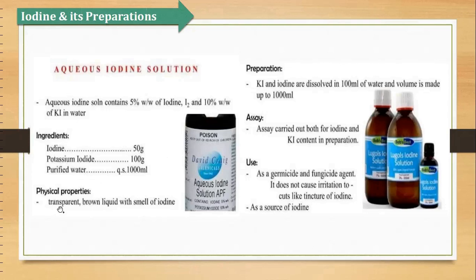Its physical properties: it is a transparent brown liquid with the smell of iodine. Prepare kaise karte hain — yeh quantities mix kar dena hai, aqueous iodine solution ban jayega. Uses same as iodine. Isko use karte hain as germicide, fungicide, aur iske ilaawa as a source of iodine.